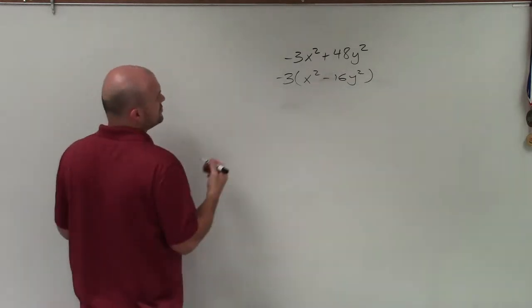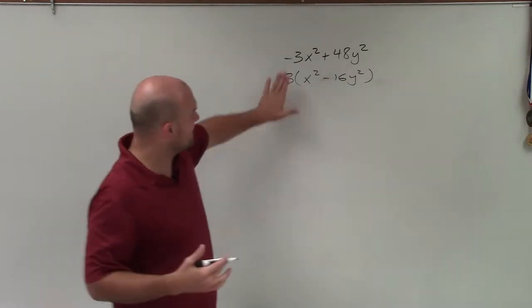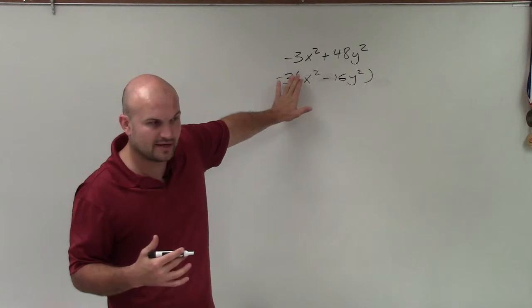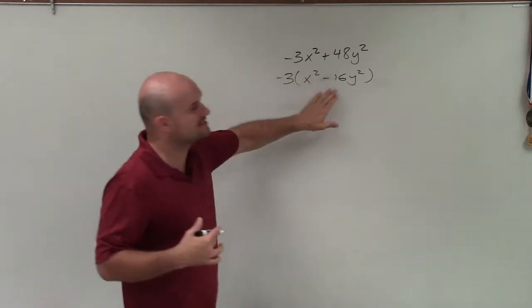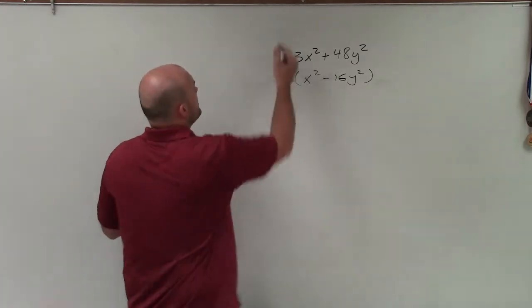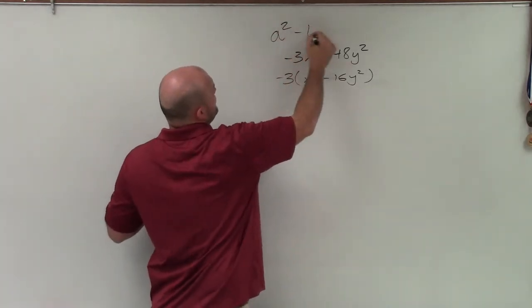OK, so now to factor this using difference of two squares, I think we're going to kind of forget about that we factored out the negative 3. It's still going to be there as a part of our solution. But we want to see, can we write this as a product further down?